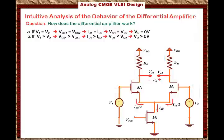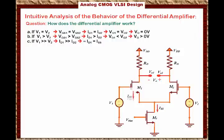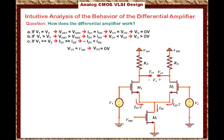Here is another case: what if V1 is much much bigger than V2? Under this condition, ID1 will be much much bigger than ID2 — we can say ID1 approximately equals the bias current ISS, or equivalently that the current through M2 is basically zero. Because Vgs1 is much much bigger than Vgs2, the current through M1 is so large that it takes all of the bias current ISS. Under this condition, Vout2 will be VDD and Vout1 will be roughly zero.